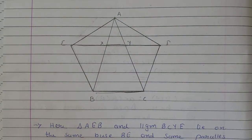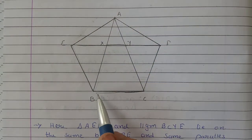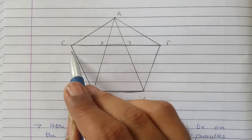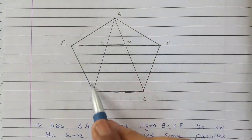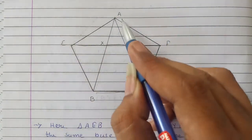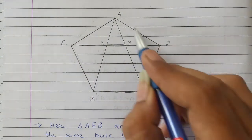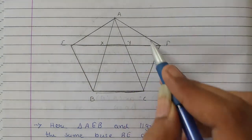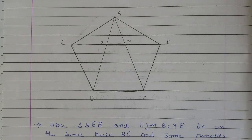Hame yeh prove karna hai ki triangle ABE ka area aur triangle ACF ka area, yeh donon equal hai — that is what we have to prove.